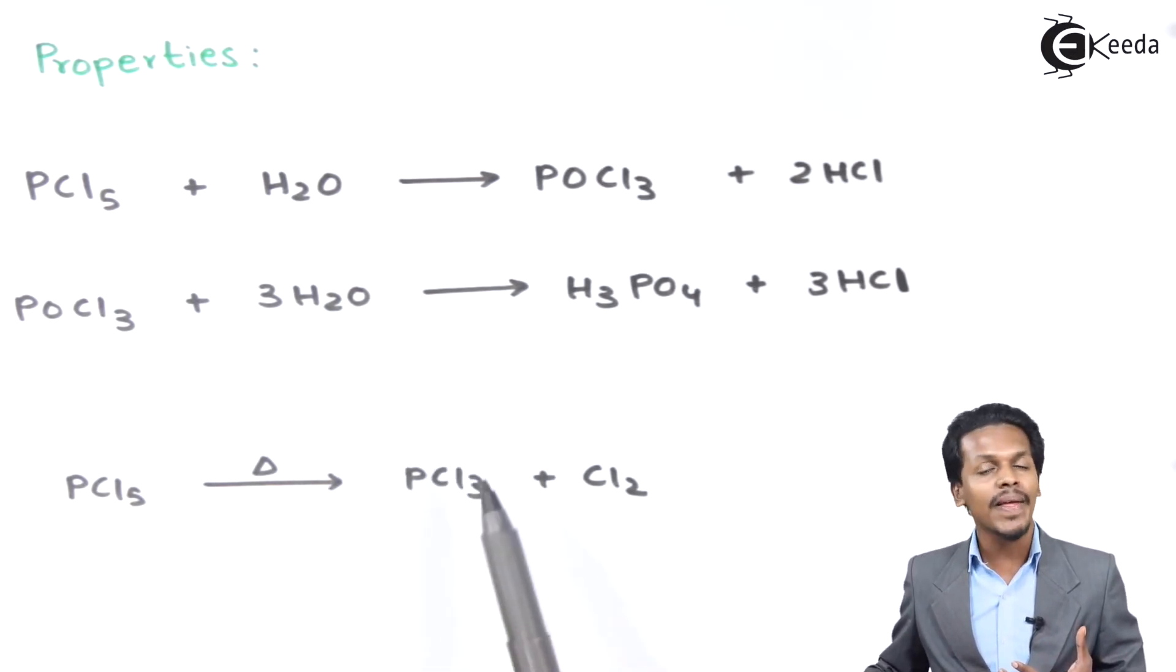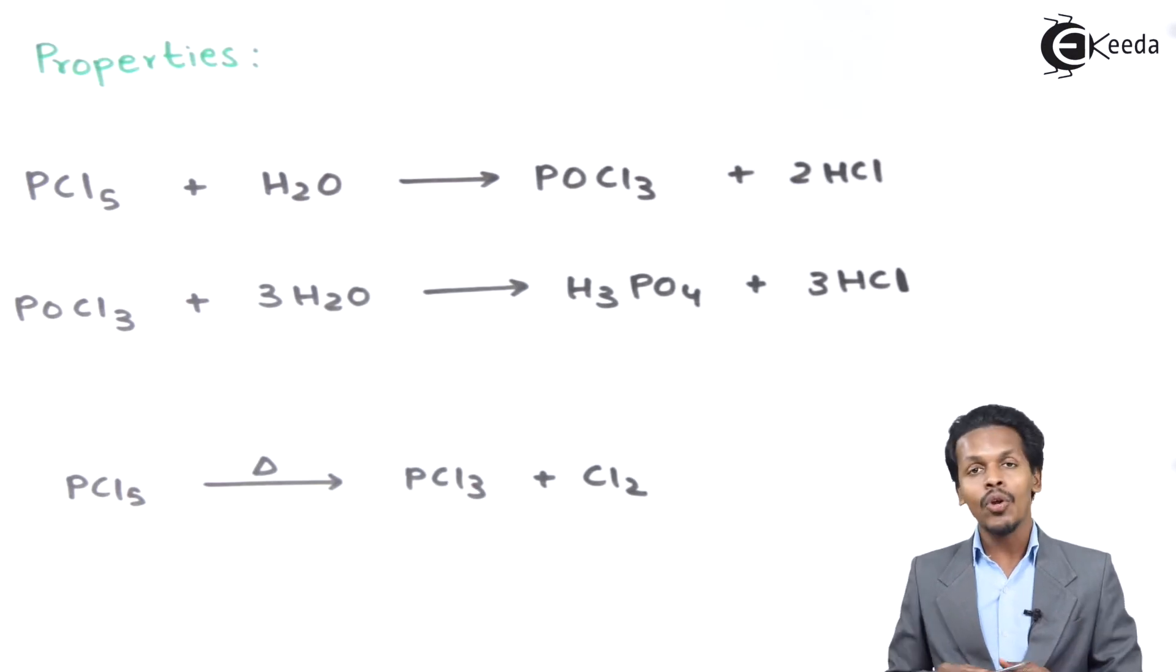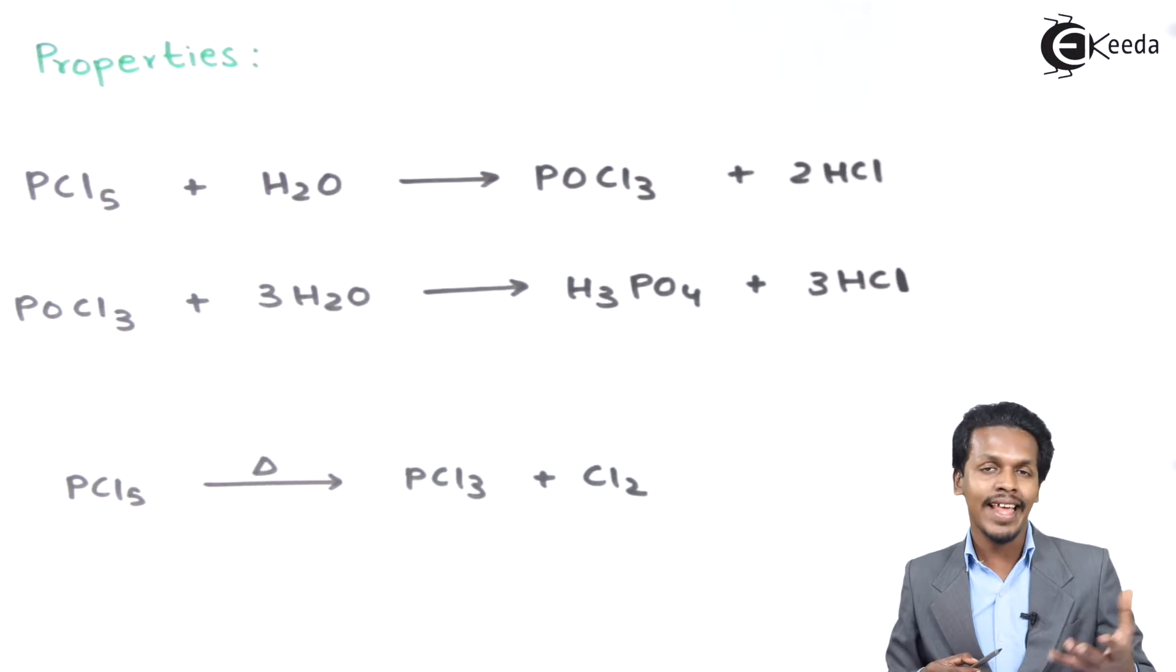This is how we can prepare PCl3 also. Therefore, by decomposition, PCl5 gives us the chlorine molecule along with PCl3. These were a few properties, and now let me talk about the next reactions also.